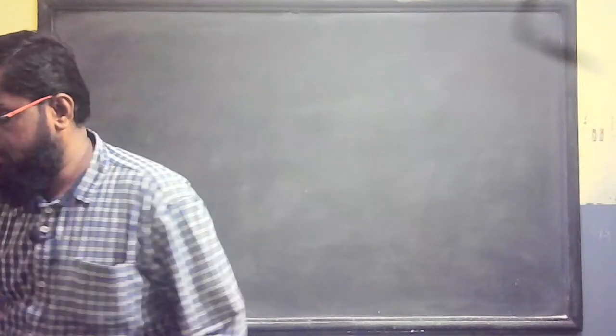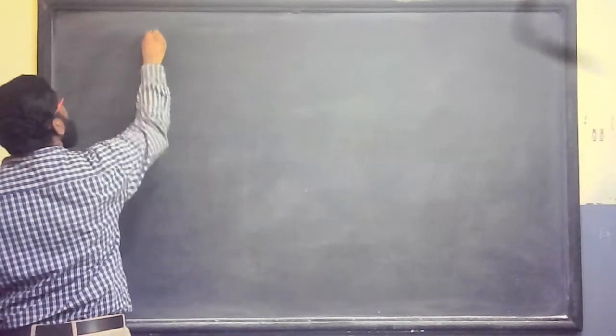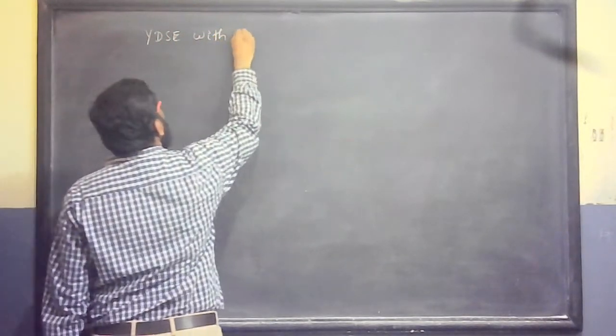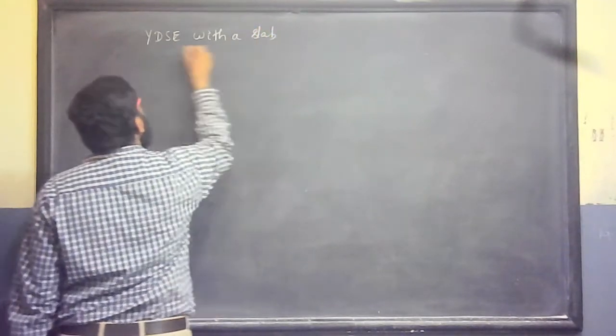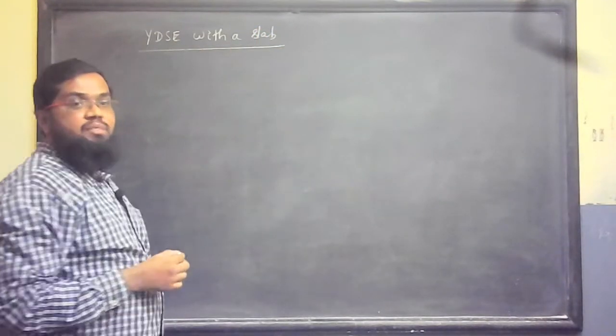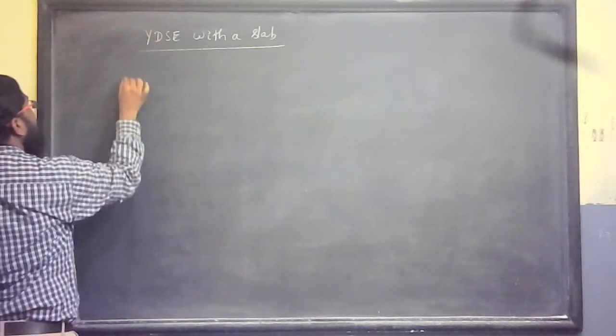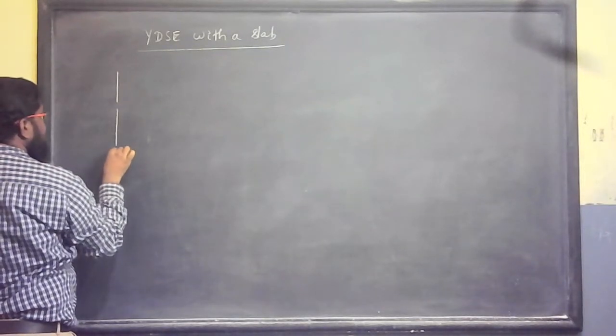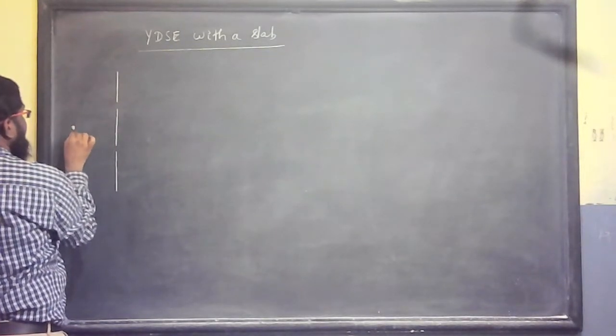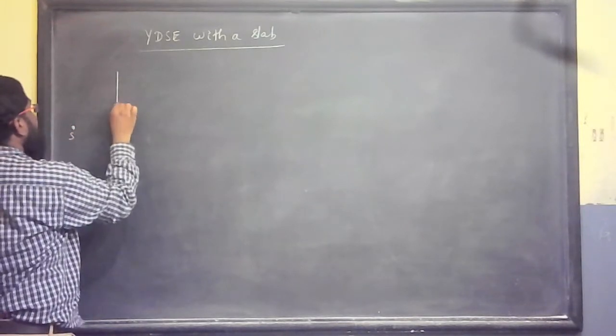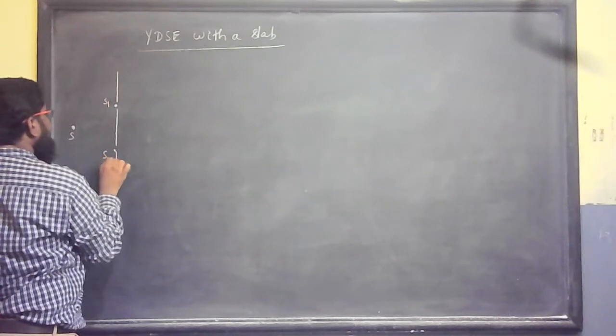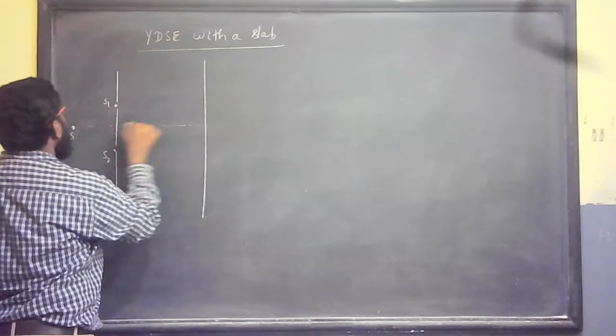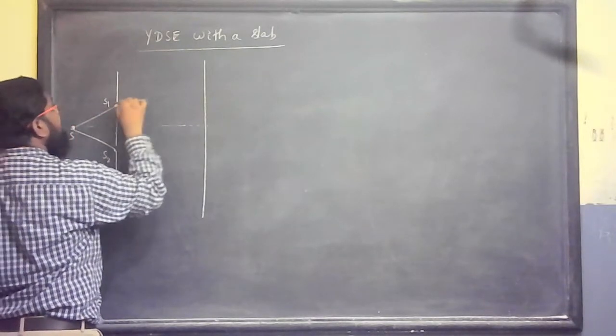YDSE with a slit. In the experiment, I will tell you, YDSE with a slab. Glass slab, transparent. Let us say, as usual, we know the standard YDS experiment, that is the two sources S1 and S2 and here is the source S. From here, two secondary sources can be seen here and there is a screen. From here the waves are coming and finally they are meeting here.